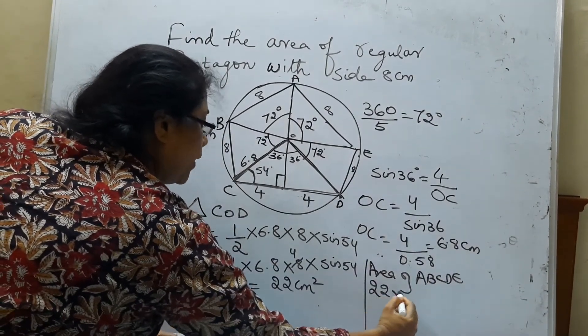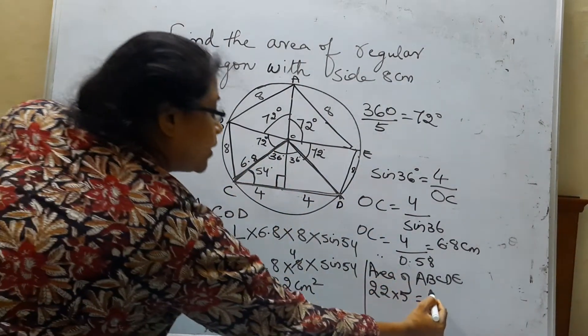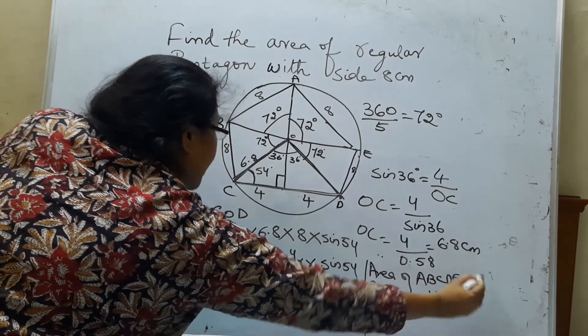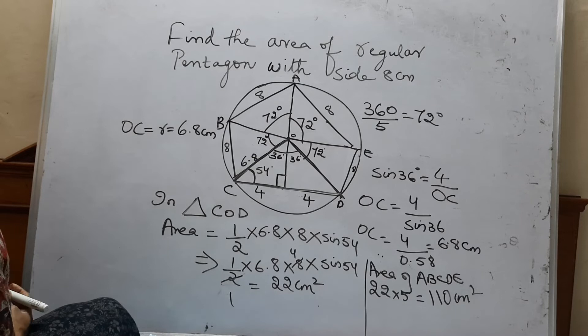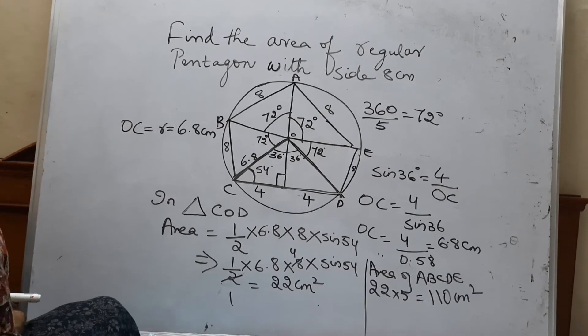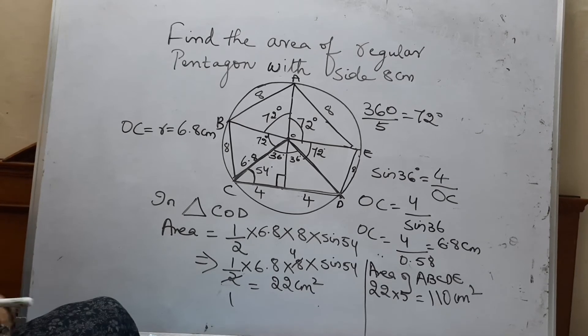22 into 5, because you have 5 triangles. We found out the area of 1 triangle. So it is 110 centimeters square. Therefore area of the regular pentagon with side 8 centimeters is 110 centimeters square.